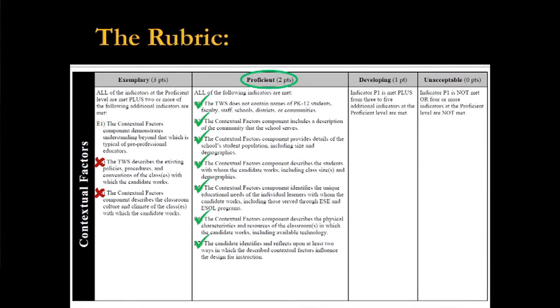Remember, I taught for six years and I'm a doctoral student. Let's say you're sitting there saying, of course you reflect understanding beyond a pre-professional educator — you're very experienced and you're a doctoral student. What if I give you that? I would only have one exemplary indicator. That gold box tells me I need two of them to be exemplary, so that component still evaluates at proficient.